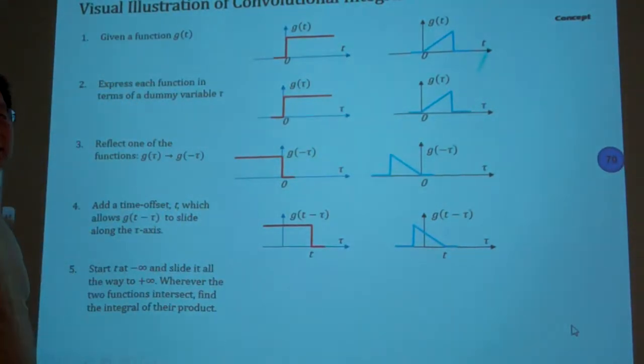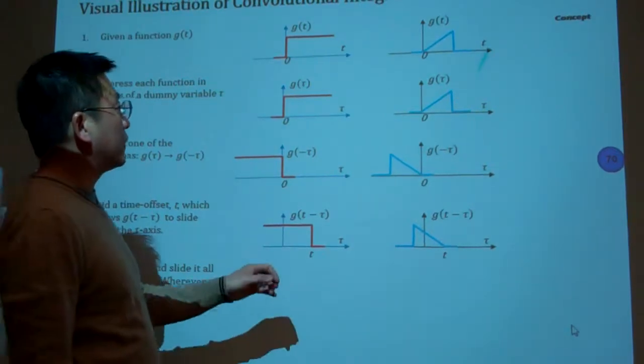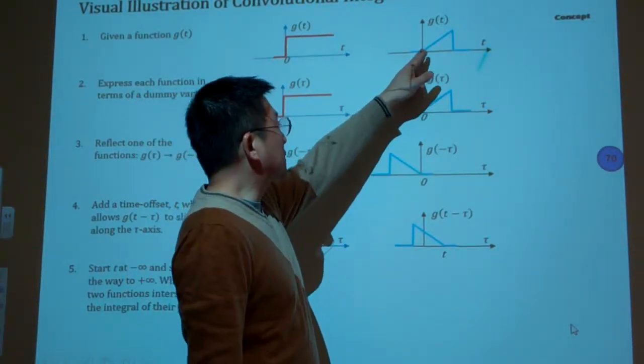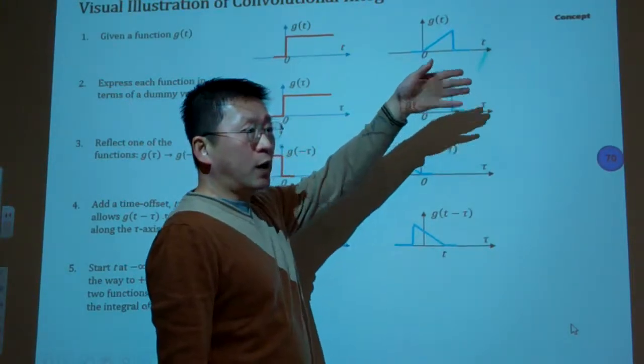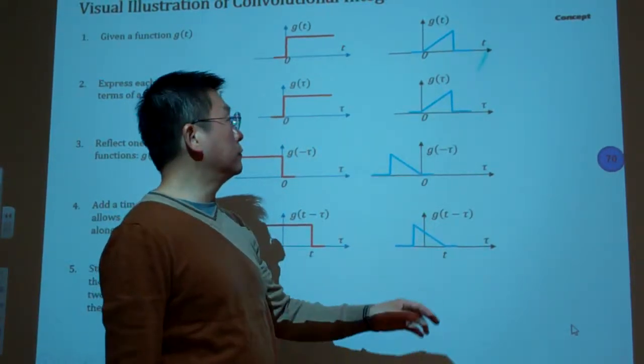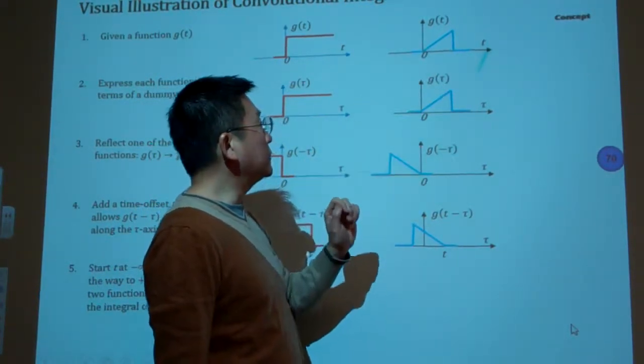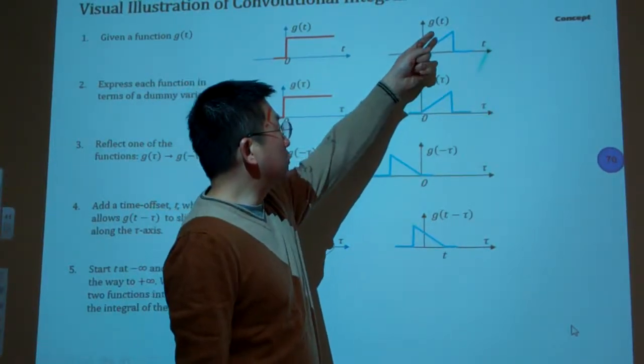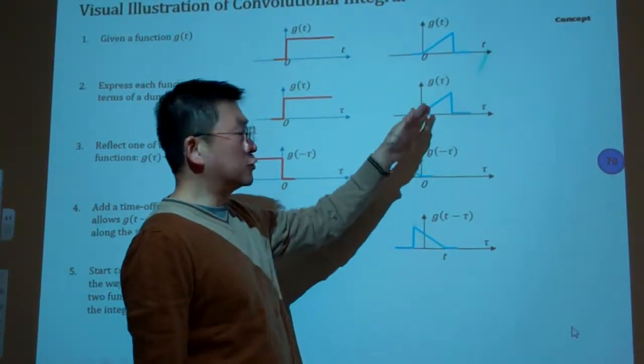And we can look at another shape of the functions. For example here, G(T) is kind of the triangle pulse signal. So this is a given one. Then the second step, we replace T by tau. The shape is the same. We simply replace the expressions of the coordinate systems.